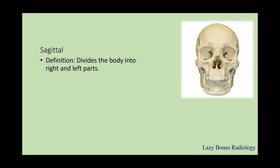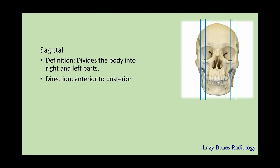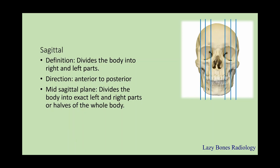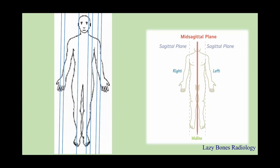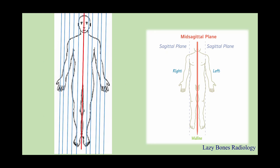Still on the topic of the sagittal plane: they divide into right and left parts and they start from anterior to posterior. Now, there is a specific sagittal plane that must not be confused with the others. This plane is called the mid-sagittal plane, which divides the body into equal left and right parts. One way I remember it: if you look at a hot dog bun, there's only one slice that goes down the middle making two halves. It is very important not to confuse the terminology — the mid-sagittal plane makes two equal halves, while a regular sagittal plane cuts the body into left and right parts. Multiple sagittal planes, only one mid-sagittal plane.